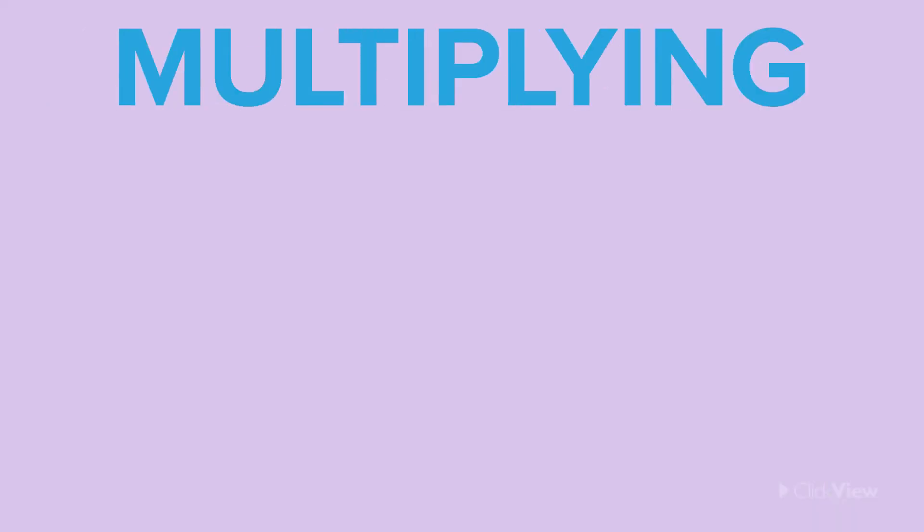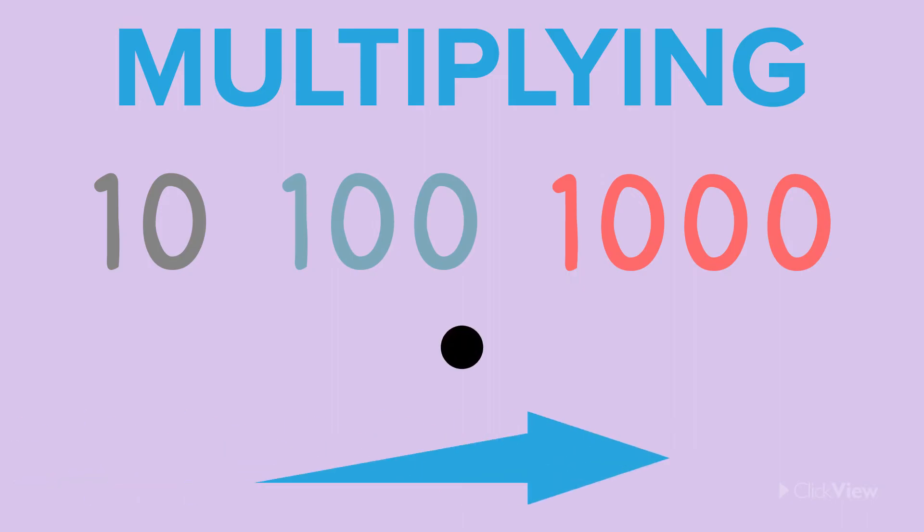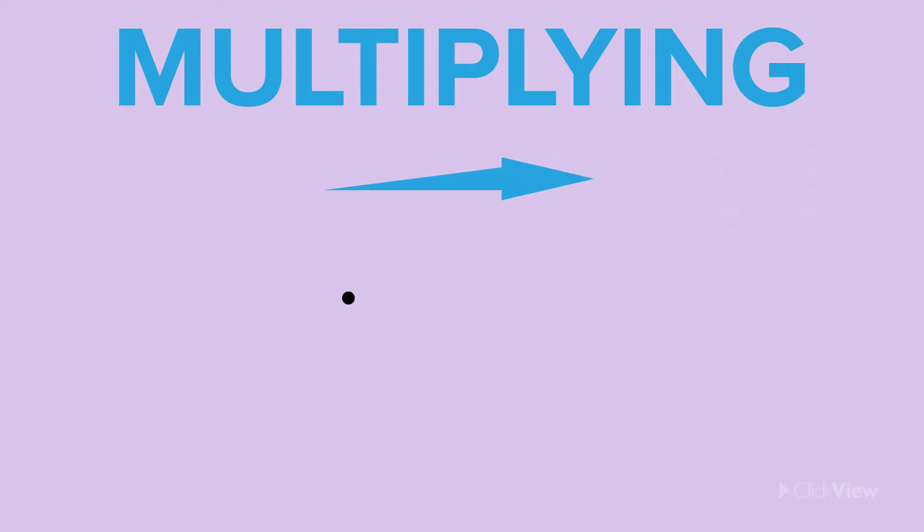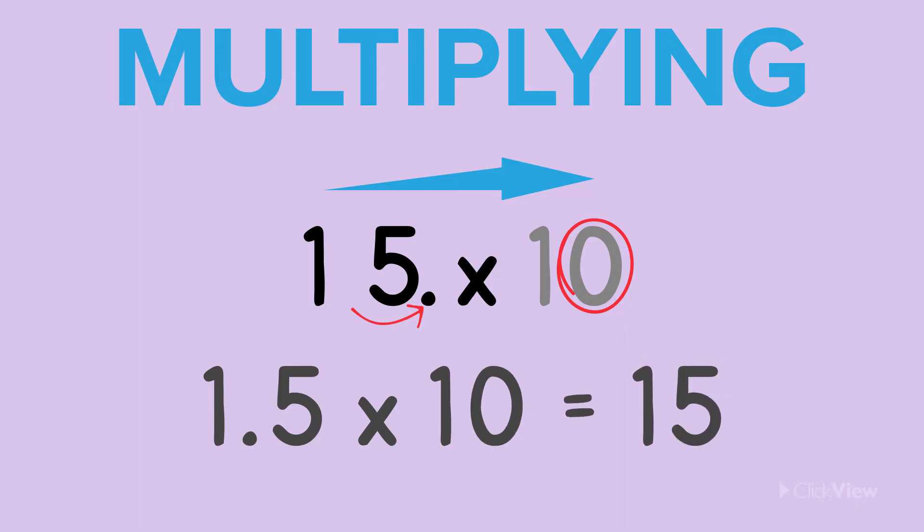When multiplying a decimal by 10, 100, or 1000, we move the decimal point to the right. We can see that by doing this, the number becomes bigger. Let's take the number 1.5. What is 1.5 multiplied by 10? Because we are multiplying 1.5 by 10, and 10 has one zero, we move the decimal point one place to the right. When we move the decimal point one place to the right, we get the answer, 15. Therefore, 1.5 times 10 equals 15.